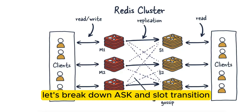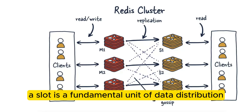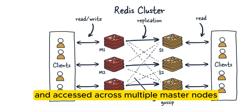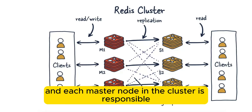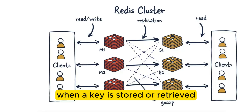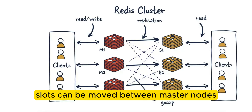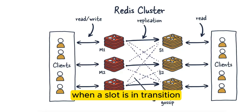Let's break down ASK and slot transition. A slot is a fundamental unit of data distribution that helps manage how keys are stored and accessed across multiple master nodes. The key space is divided into 16,384 hash slots, and each master node in the cluster is responsible for a specific subset of these slots. When a key is stored or retrieved, Redis uses a hashing algorithm to determine which slot the key belongs to. In Redis cluster, slots can be moved between master nodes for load balancing or maintenance.